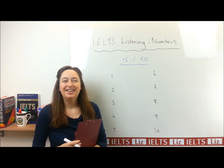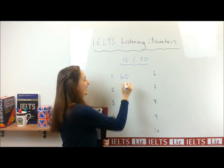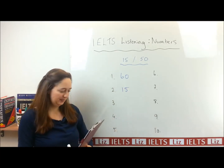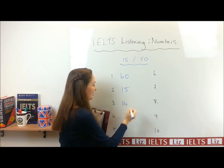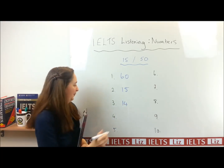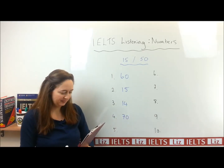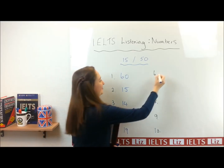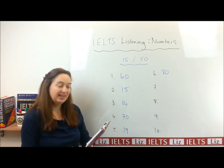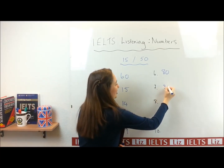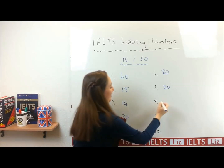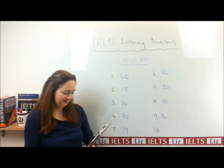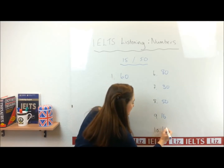Let's have a look at the answers. The answer for number one is sixty. Number two: fifteen. Number three: fourteen. Number four: seventy. Number five: nineteen. Number six: eighty. Number seven: thirty. Number eight: fifty. Number nine: sixteen. And number ten: eighteen.